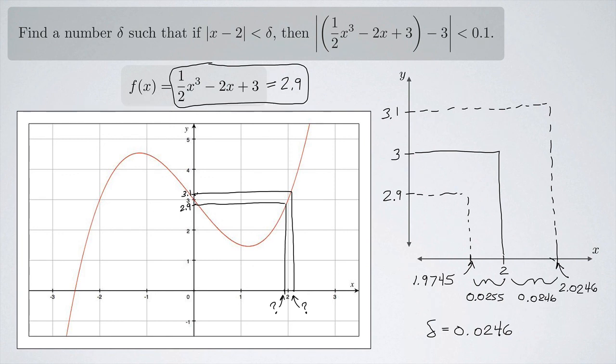Now, of course, this is one possible delta. Anything smaller than this would also work.